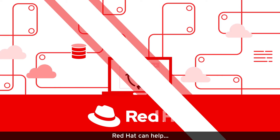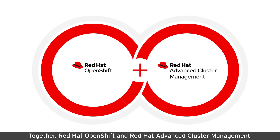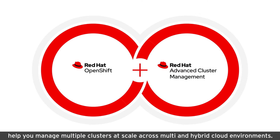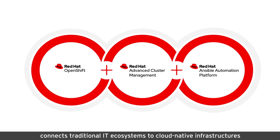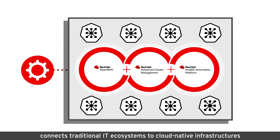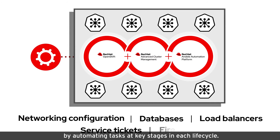Red Hat can help. Together, Red Hat OpenShift and Red Hat Advanced Cluster Management help you manage multiple clusters at scale across multi- and hybrid cloud environments. And the integration of Red Hat Ansible Automation Platform with Red Hat Advanced Cluster Management for Kubernetes connects traditional IT ecosystems to cloud-native infrastructures by automating tasks at key stages in each lifecycle.